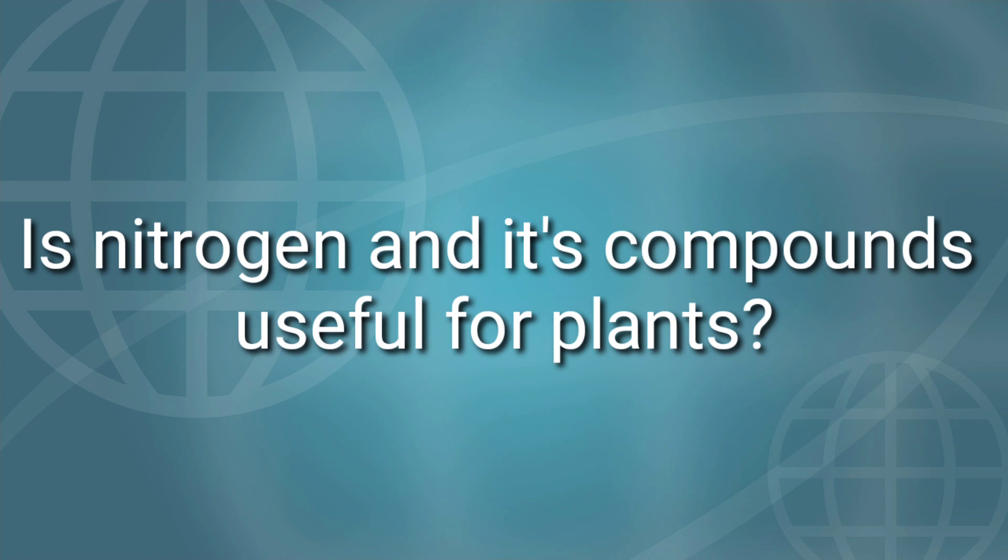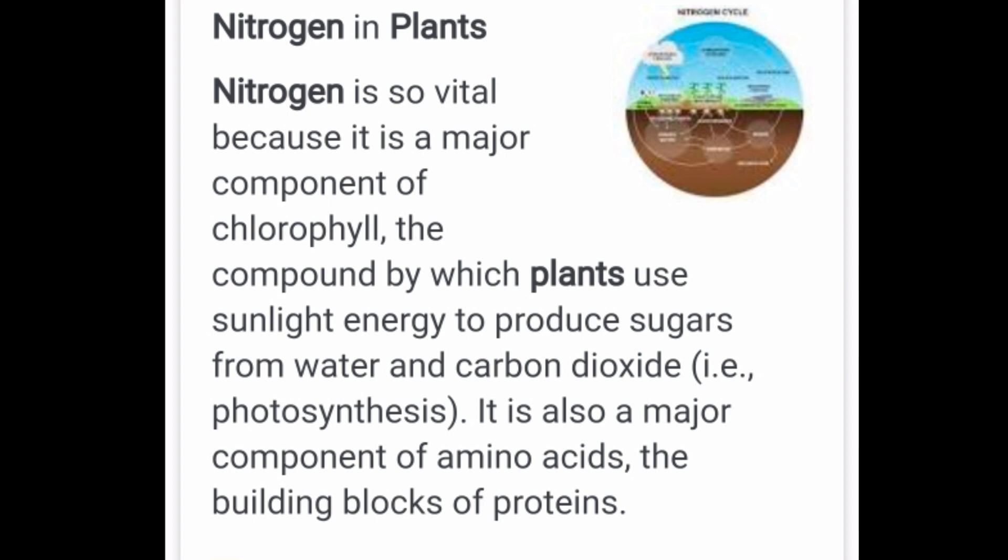Is Nitrogen and its compounds useful for plants? Let us see. Nitrogen is so vital because it is a major component of chlorophyll — the compound by which plants use sunlight energy to produce sugar from water and carbon dioxide. It is also a major component of amino acids, the building blocks of protein.